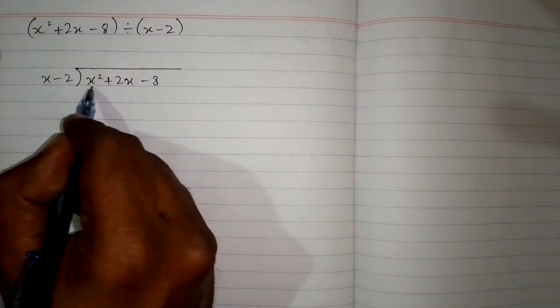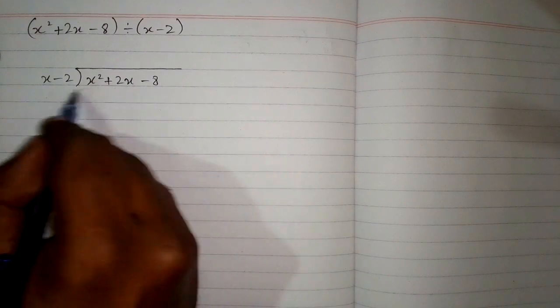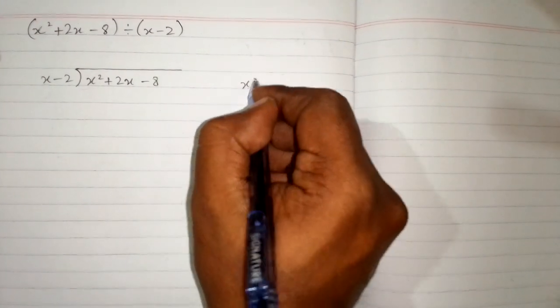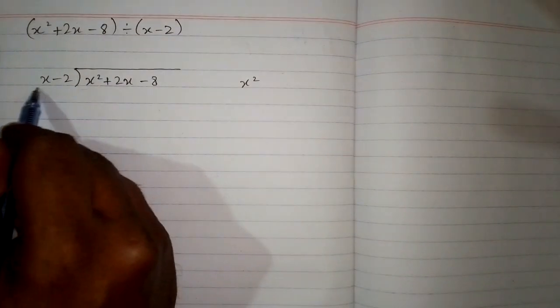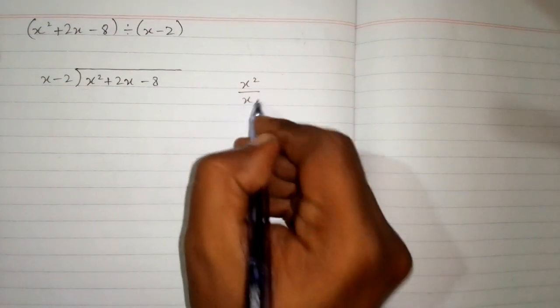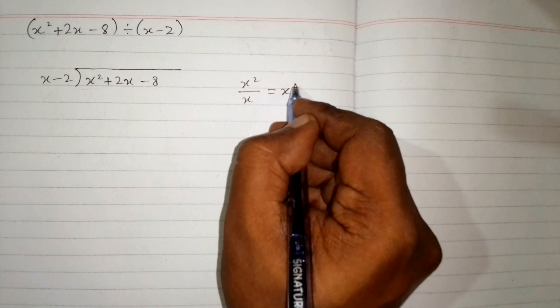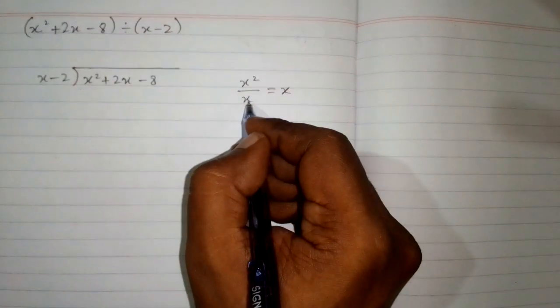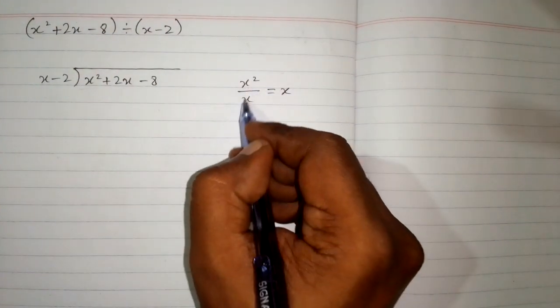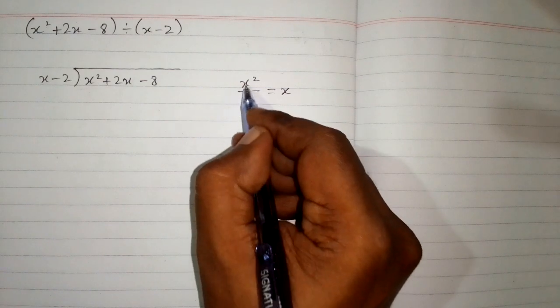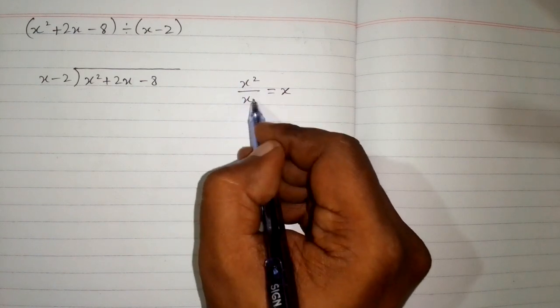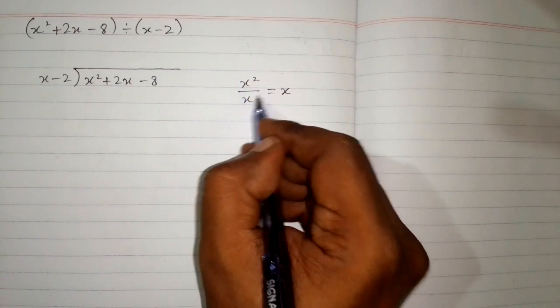Now we take the first term of this polynomial which is x square and the first term of the divisor which is x. So x square upon x is x to the power 1 or x by the rule of indices. If we divide two variables and the variables are the same, then the power will be subtracted. So 2 minus 1 is 1.